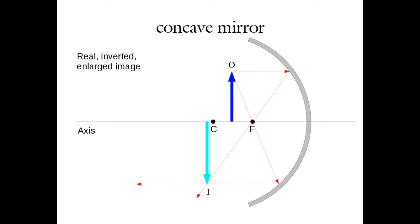Now consider the same concave mirror with the object located between the center of curvature and the focal point. Tracing the parallel ray: it strikes the mirror and passes through the focal point. The focal ray passes through the focal point, strikes the mirror, and comes out parallel to the optical axis. The reflected rays converge at a point behind where the object was located. The image is still inverted and still real, but now it appears larger than the original object — a real, inverted, enlarged image. All of this is determined simply by doing very basic ray tracing.